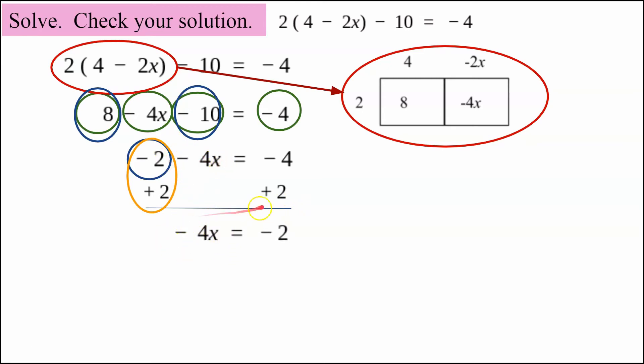Don't lose that negative sign. And negative 4 add 2 is negative 2. So now that I've isolated my variable term, I want to find out what x is equal to. So I need to undo multiply by negative 4.